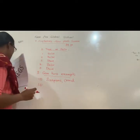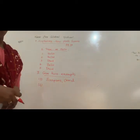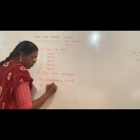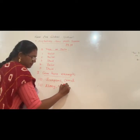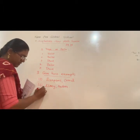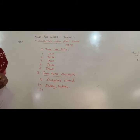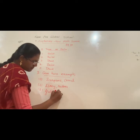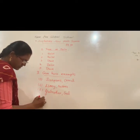Second one: give two examples for evergreen trees — ebony and rubber. Third one: give two examples for deciduous trees — gulmohar and sal. These are the two examples.